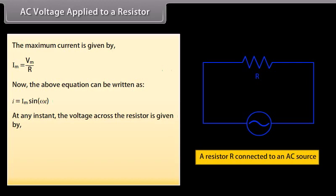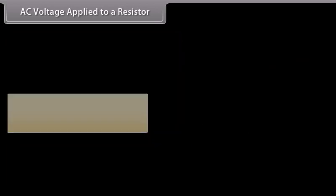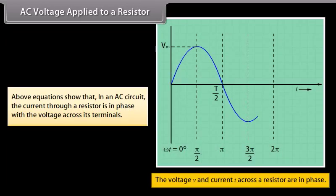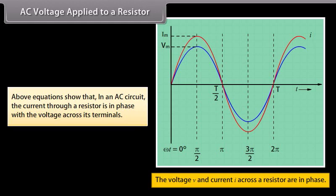At any instant, the voltage across the resistor is given by Vr = IR. By putting the value of I, we get Vr = Vm sin(ωt). The above equation shows that in an AC circuit, the current through a resistor is in phase with the voltage across its terminals.